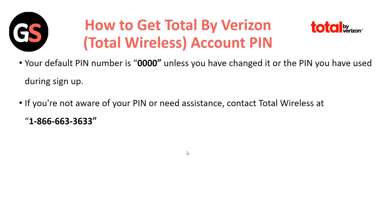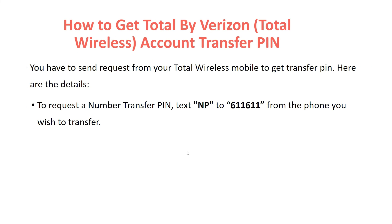Now, how to get your account PIN: your default account PIN is 0000, unless you have changed it or used a different PIN during sign-up. If you are not aware of your PIN or need assistance, contact Total Wireless at 1-866-663-3363. Dial this number to get your account PIN.